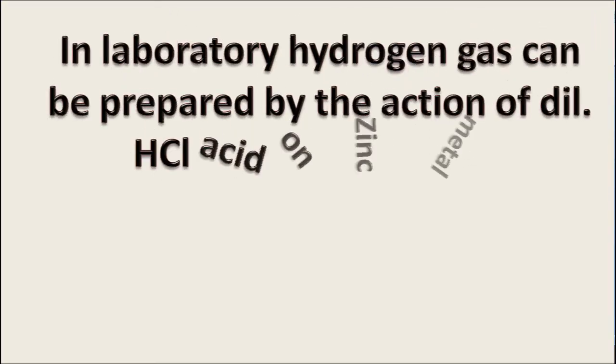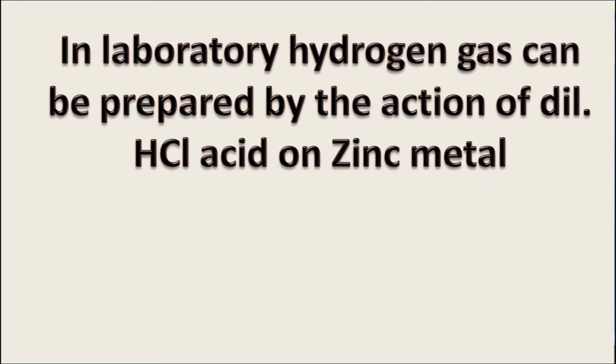In laboratory, hydrogen gas can be prepared by the action of dilute hydrochloric acid on zinc metal. Granulated zinc when reacts with dilute hydrochloric acid produces hydrogen gas along with zinc chloride.